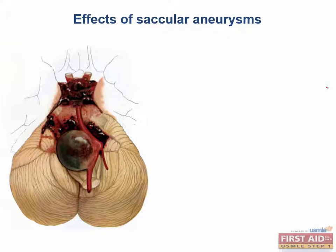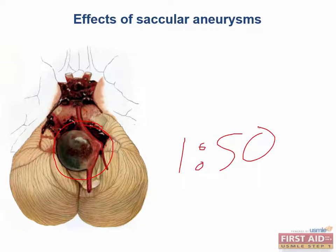Saccular, also known as berry aneurysms, are the most common type of aneurysm encountered on the boards. These aneurysms often go undetected unless they get big enough to compress a surrounding structure or if they rupture. In fact, it's estimated that one in every 50 people have a berry aneurysm, which is actually kind of scary odds. So let's talk about how these aneurysms can present in the clinic depending on where they occur.